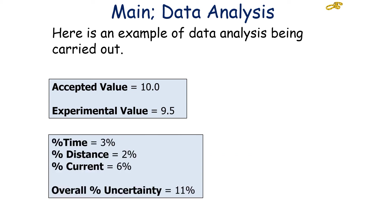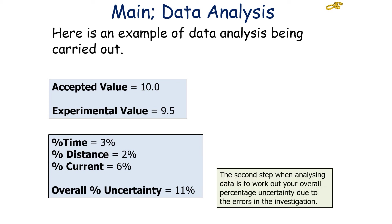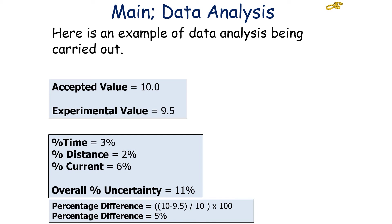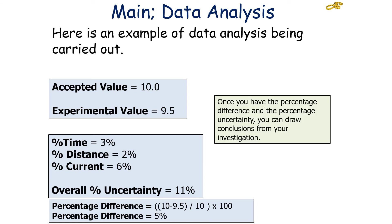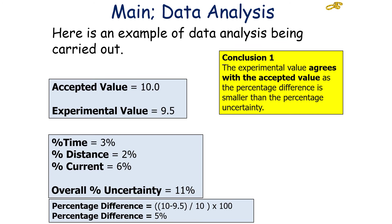The second step is looking at your overall percentage uncertainty. Say we had a percentage uncertainty in time of 3%, in distance of 2%, and in current of 6%. Because they are all multiplied or divided in the equation, they all add up, giving an overall percentage uncertainty of 11%. So our percentage uncertainty is 11% and our percentage difference is 5%. Conclusion 1: the experimental value agrees with the accepted value, because the percentage difference is smaller than the percentage uncertainty.